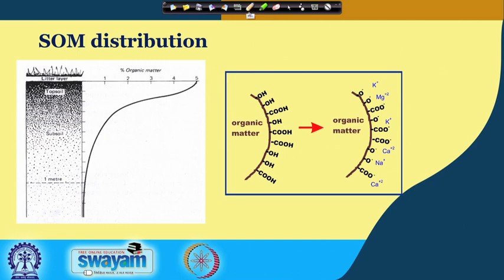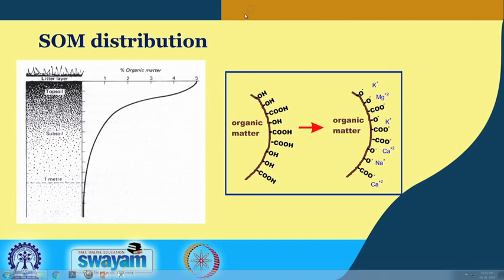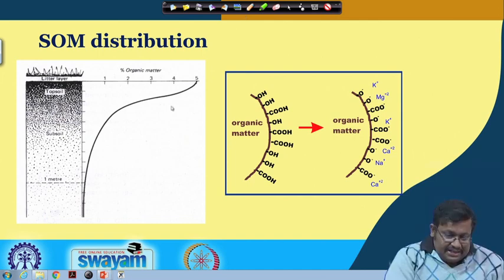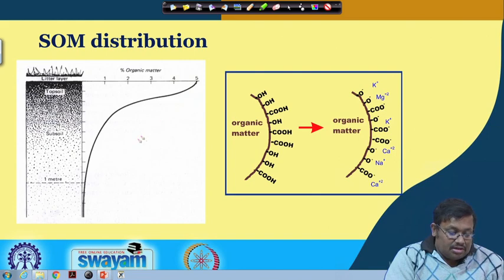Let us start here. In this slide you can see the soil organic matter distribution. At the top layer of the soil, the concentration or amount of organic matter is always higher as compared to the subsoil.